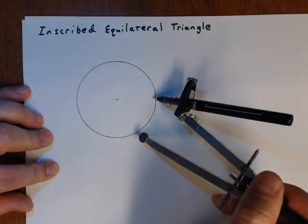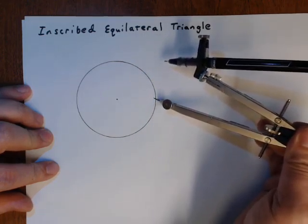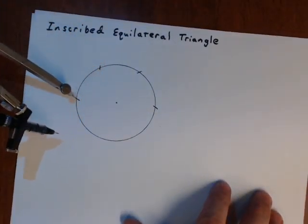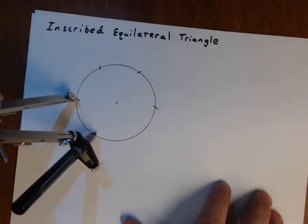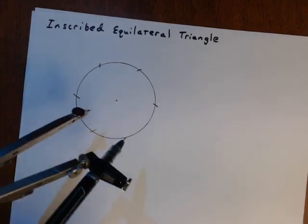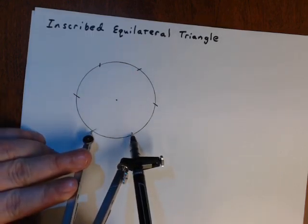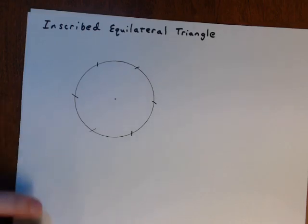Now, without changing the compass, we put the pin anywhere on the circle and make a tick mark. From that tick mark, we make another and walk around the circle, and we don't change the compass.